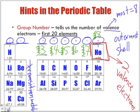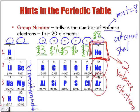Helium is the only element in group 18 that has 2 valence electrons instead of 8, because it is in period 1 — its first and only shell can fit a maximum of 2 electrons. So 2 acts the same way for helium as 8 does for neon or argon — it represents a full outer shell.